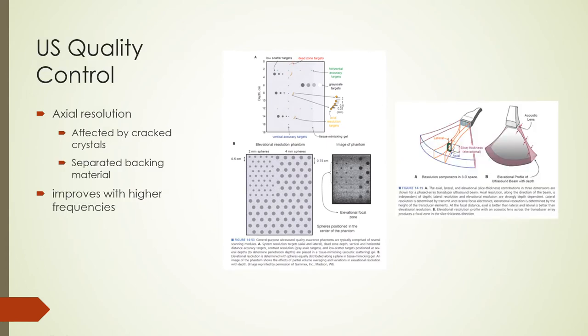Axial resolution is the resolution along the axis of the beam and can be tested at different depths using the first module. Any reduction in bandwidth or increase in spatial pulse length decreases axial resolution. Problems that affect axial resolution include cracks in crystal materials and separation of backing material. Axial resolution improves with higher frequencies but only at lower depths.